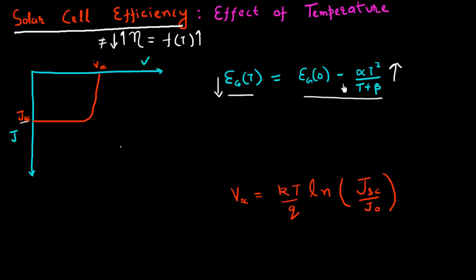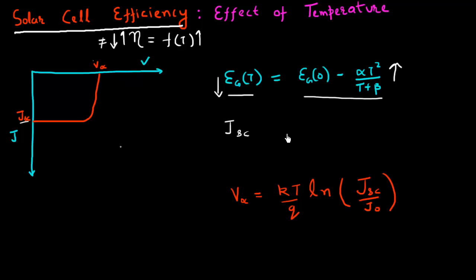If the band gap reduces as you increase the temperature, you will essentially absorb a lot more of your solar spectrum, because more photons will now be above the new reduced band gap of your solar cell. So your short circuit current would essentially increase as you increase the temperature. This band gap has a weak dependence on temperature, and accordingly, the short circuit current has a weak temperature dependence.